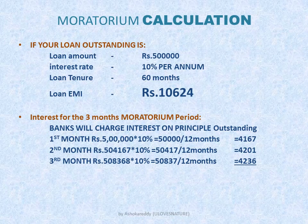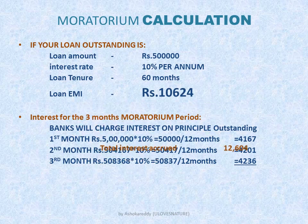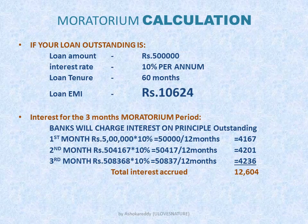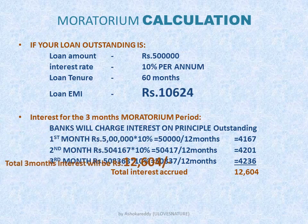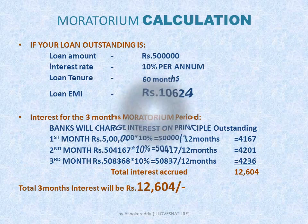To calculate the interest, you need to put this 5 lakh into 10% divided by 12 months — you will get the interest rate. So your total interest accrued after 3 months is Rs. 12,604. Total 3 months interest will be Rs. 12,604.